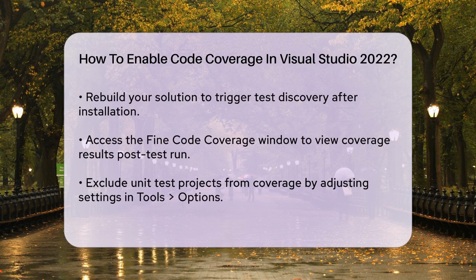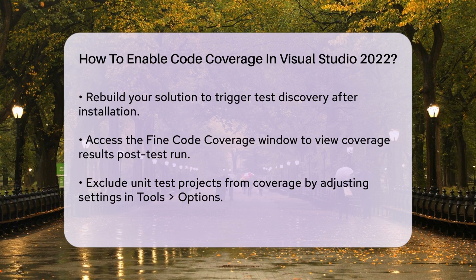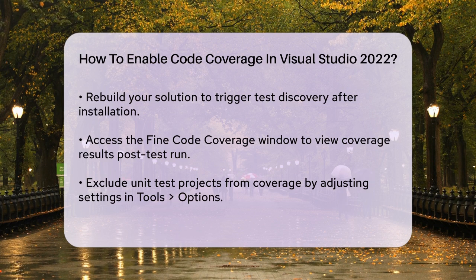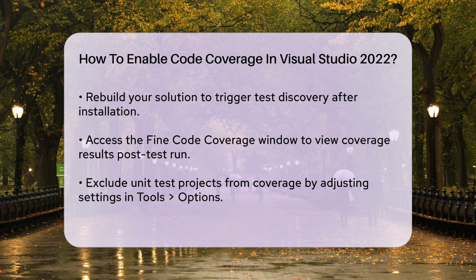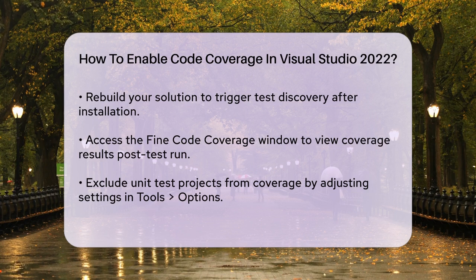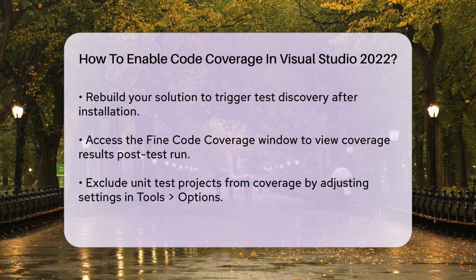After installing the Fine Code Coverage Extension, you need to configure it. Open your solution and rebuild it to trigger test discovery. Go to View, Other Windows, Fine Code Coverage to open the Fine Code Coverage window. Run your tests and the code coverage will be displayed there. To exclude unit test projects from the coverage, go to Tools, Options, type Fine Code in the filter, select Fine Code Coverage, and set Include Test Assembly to False.